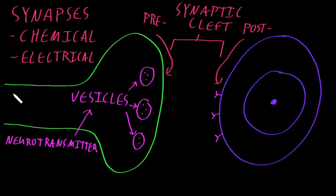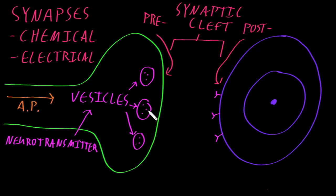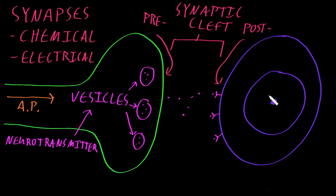When an action potential reaches an axon terminal, the neurotransmitter inside the synaptic vesicles is usually released into the synaptic cleft, where it crosses to bind to the neurotransmitter receptors on the post-synaptic membrane of the target cell.